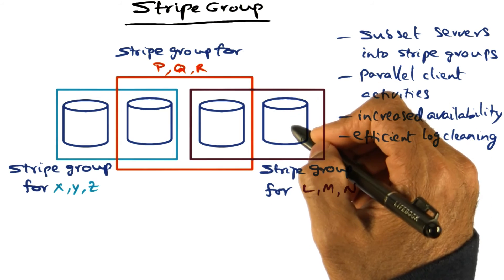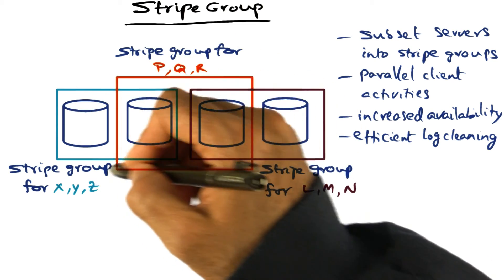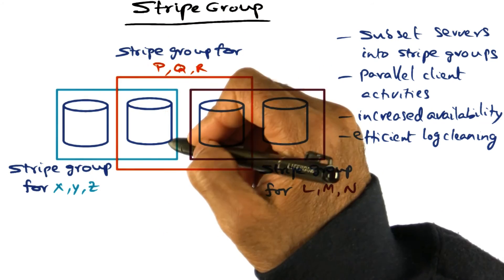So let's say that these two disks fail for some reason. You can still serve the clients who are being served by this particular stripe group.